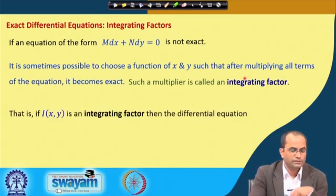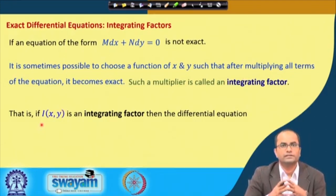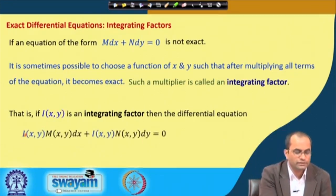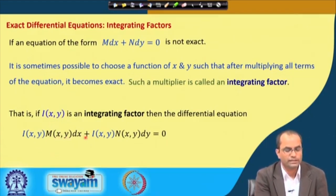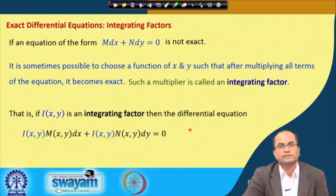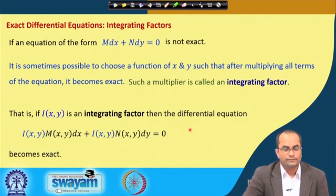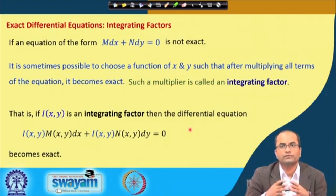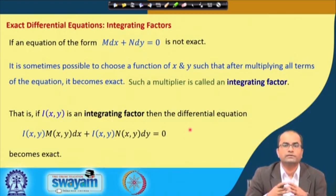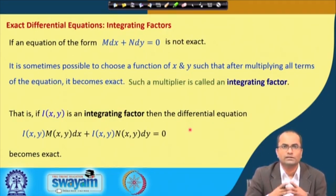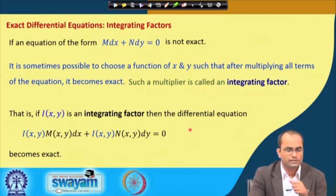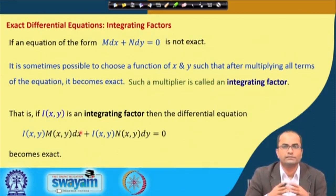The integrating factor, denoted I(x,y), is a function such that after multiplication the given differential equation becomes exact. So I(x,y)·M(x,y) dx plus I(x,y)·N(x,y) dy = 0 becomes exact. The given equation is not exact and difficult to solve directly, so we find the integrating factor, multiply it to the equation, and then solve the resulting exact equation by finding f whose differential is the left-hand side.